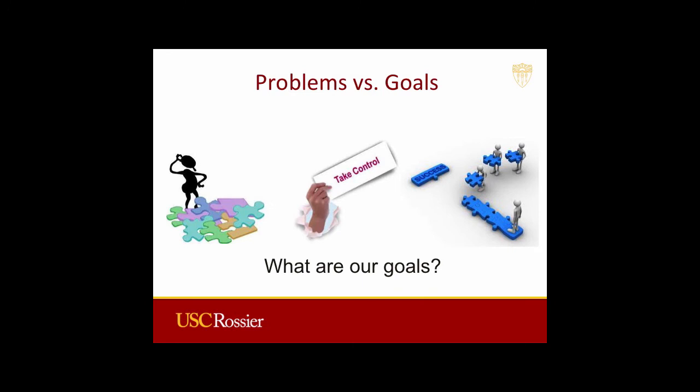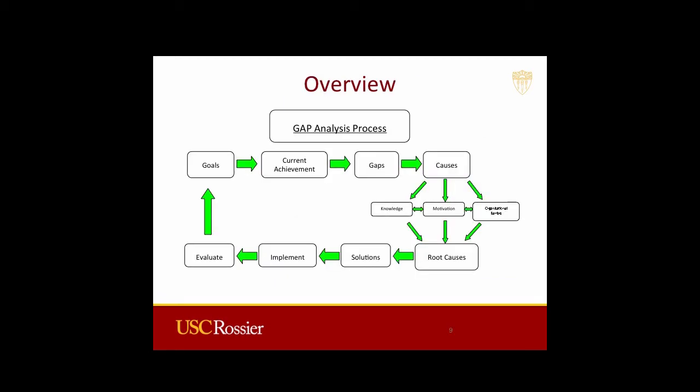The gap analysis process begins with a very clear, succinct statement of the problem. However, one characteristic of a problem is that problems, similar to wishes, are based on variables that you do not control. The key word here is control. When you restate problems as goals, you identify the relevant variables in the problems and determine how the organization can control them by establishing performance goals for all the stakeholders within and outside of the organization. In short, gap analysis is a systematic, problem-solving approach to improve human performance and achieve organizational goals. Moreover, the gap analysis model helps organizations to identify goals with the purpose of gaining a deeper understanding of any possible root causes that could be impeding the organization from achieving its goals.